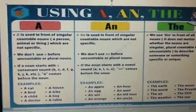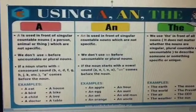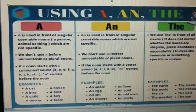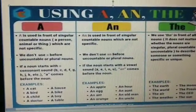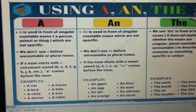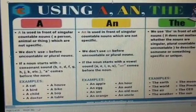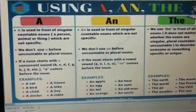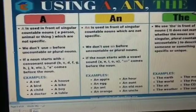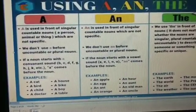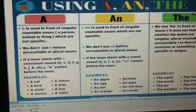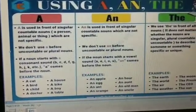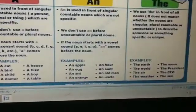And if a noun starts with a consonant sound — for example, b, c, d, f, g, etc. — 'a' comes before the noun. For example: a cat, a bird, a child, a doctor, a house, a bike, a boy, and a table.